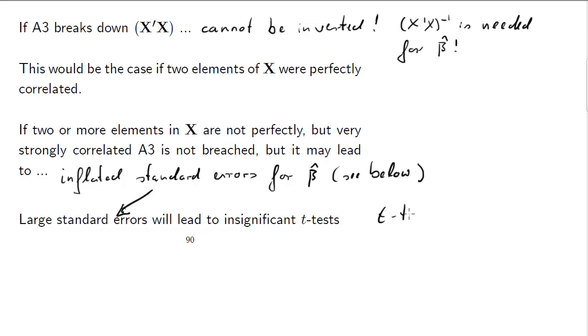But if we have this, then let's just look what the t-test looks like. Our standard t-test, the standard error of beta hat, or the j-th element of beta hat, appears in the denominator here.